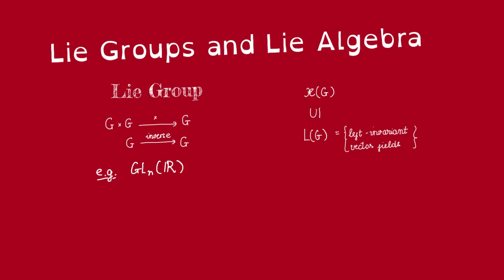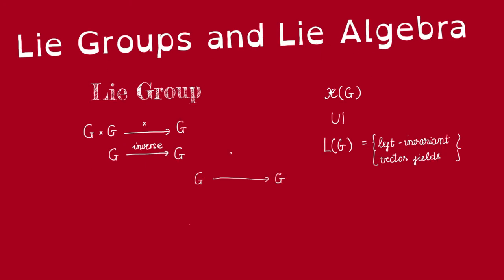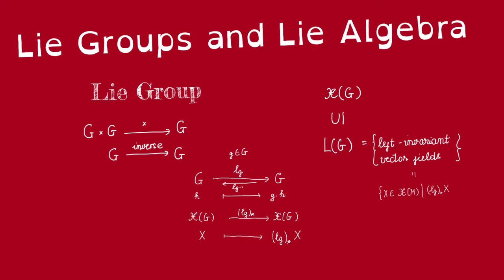So what do we mean by left invariant vector fields — invariant under what? Every element g in G induces a diffeomorphism given by left multiplication by g, whose inverse is left multiplication by g inverse. Since we can push forward vector fields under diffeomorphisms, given a vector field X we can talk about its push forward under left multiplication by every element g. A smooth vector field X on G is called left invariant if for every element g in G, the push forward of X under left multiplication by g is X itself.